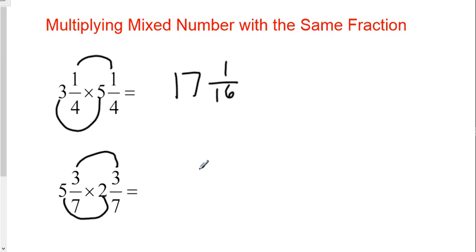So first things first, multiply the fractions. 3 sevenths times 3 sevenths is 9 forty-ninths.